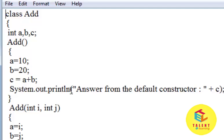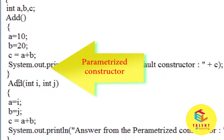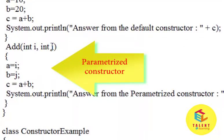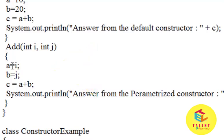And in the same way, another constructor which takes the parameter. Here, integer value i assigned to variable a, integer value j assigned to variable b, and c takes the result of addition of a and b.